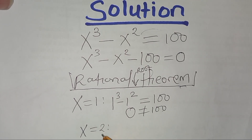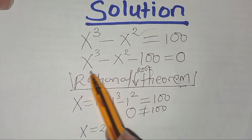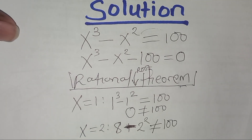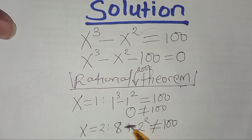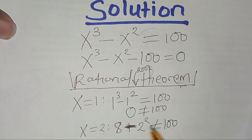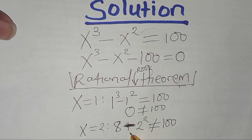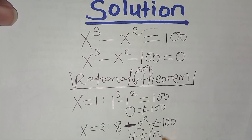Let's proceed to x equal to 2. Substituting 2 into the equation, we'll have 2 cubed, which is basically 8, subtract 2 squared, which is 4. So 8 minus 4 equals 4, and this is not equal to 100.